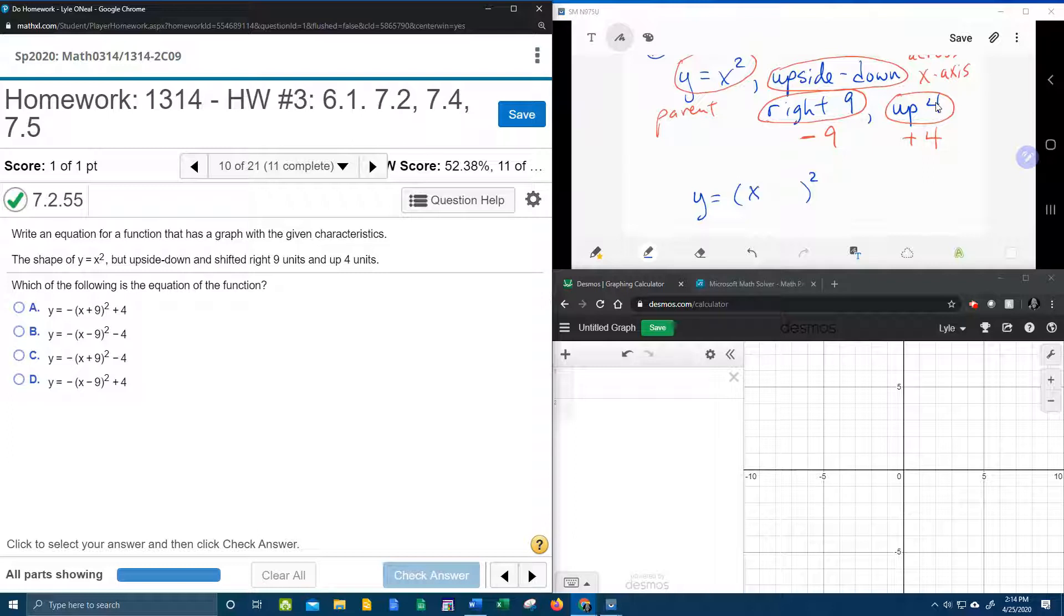The vertical shift up 4 is going to go outside the function. The horizontal shift, right 9, is going to go inside the function.